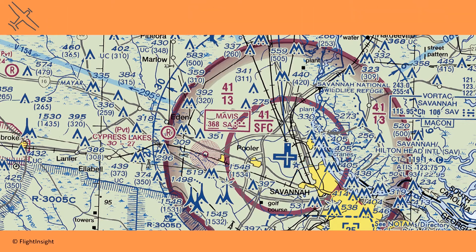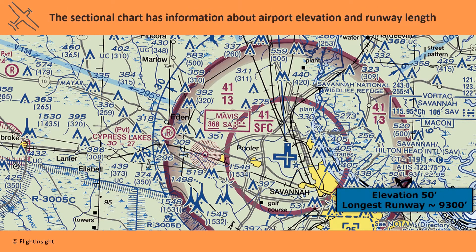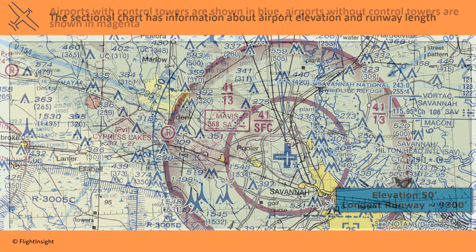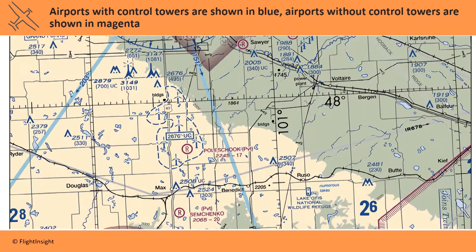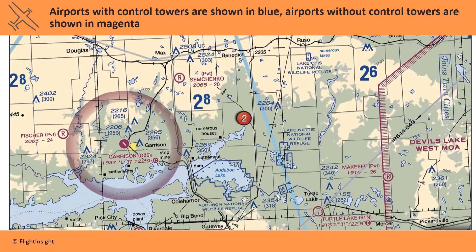The sectional chart has information about airport elevation and runway length. Savannah's airport is at 50 feet elevation, and its longest runway is 9,300 feet, rounded to the nearest hundred. Airport symbols also use different colors to distinguish controlled from uncontrolled. Airports with control towers are shown in blue, while airports without control towers are shown in magenta.